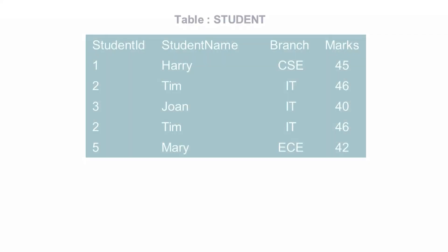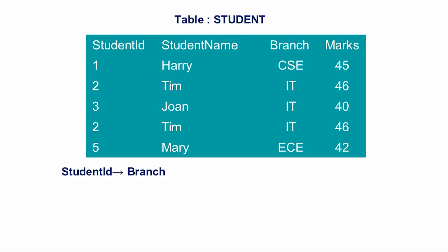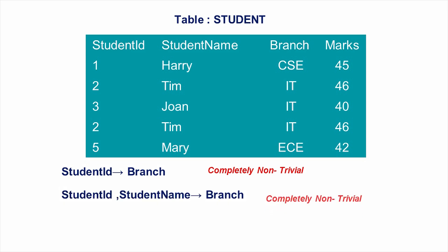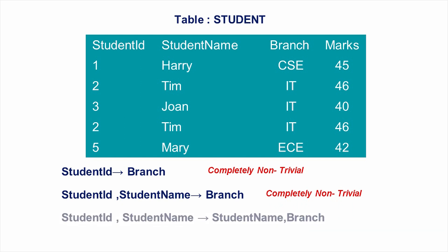Student_id determines branch is a completely non-trivial functional dependency. Student_id, student_name determines branch is also a completely non-trivial functional dependency. Student_id, student_name determines student_name and branch is not completely non-trivial since student_name is common on both sides.